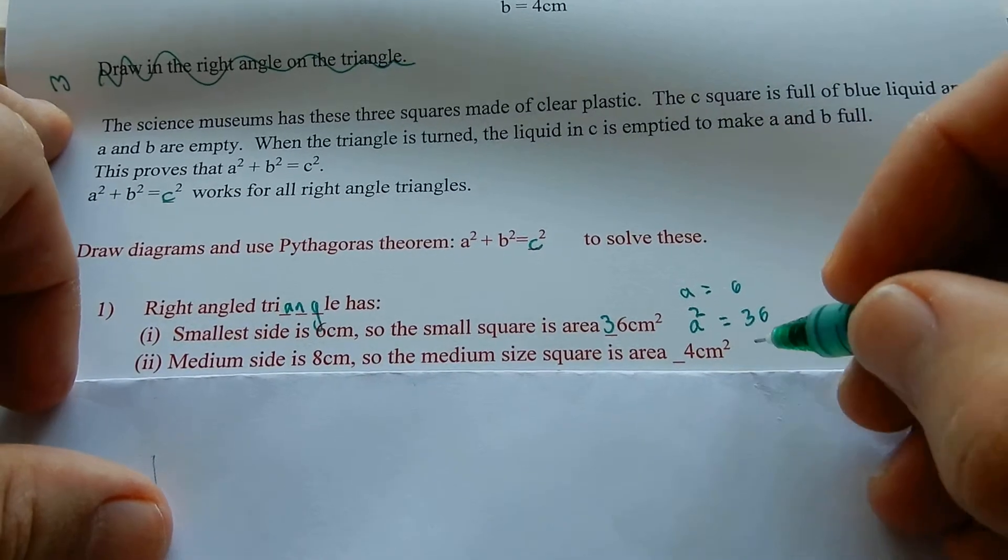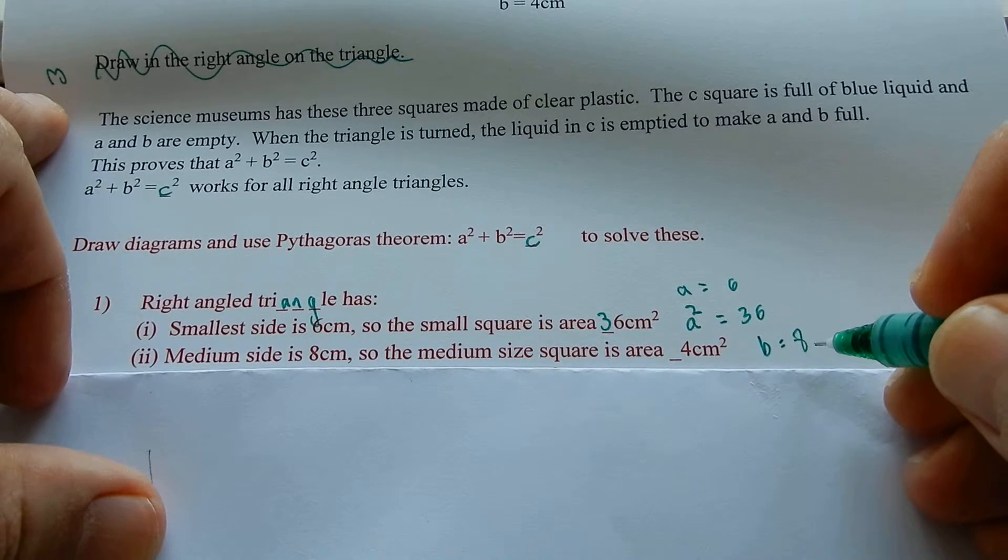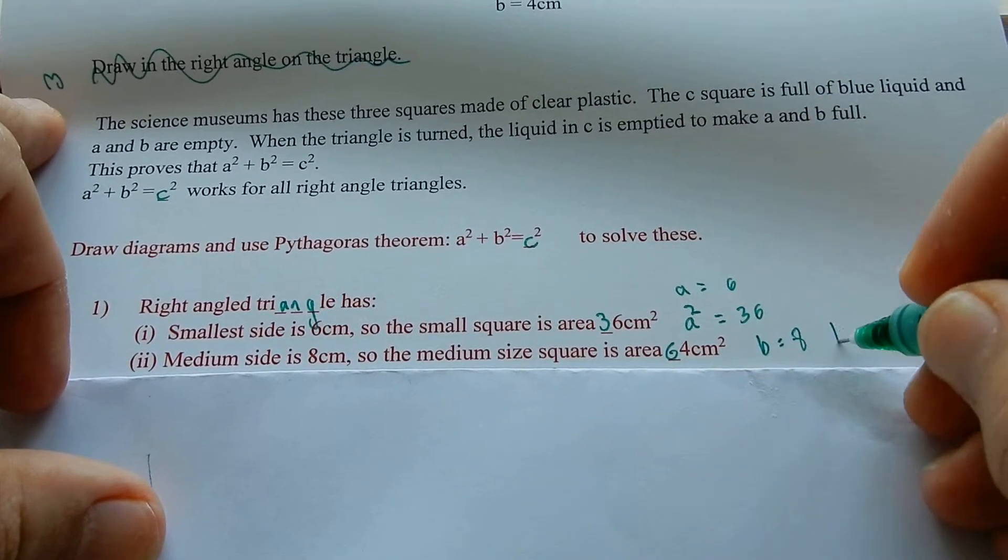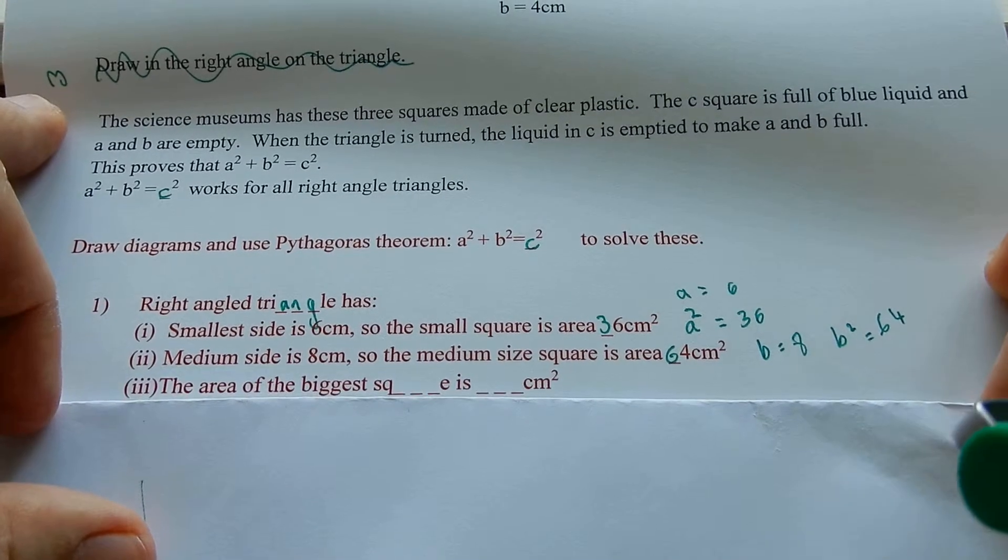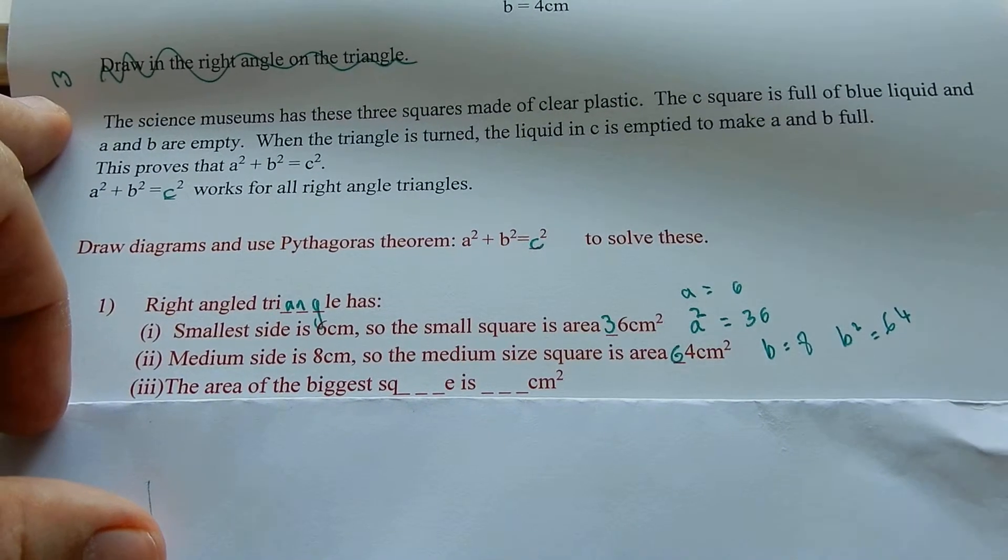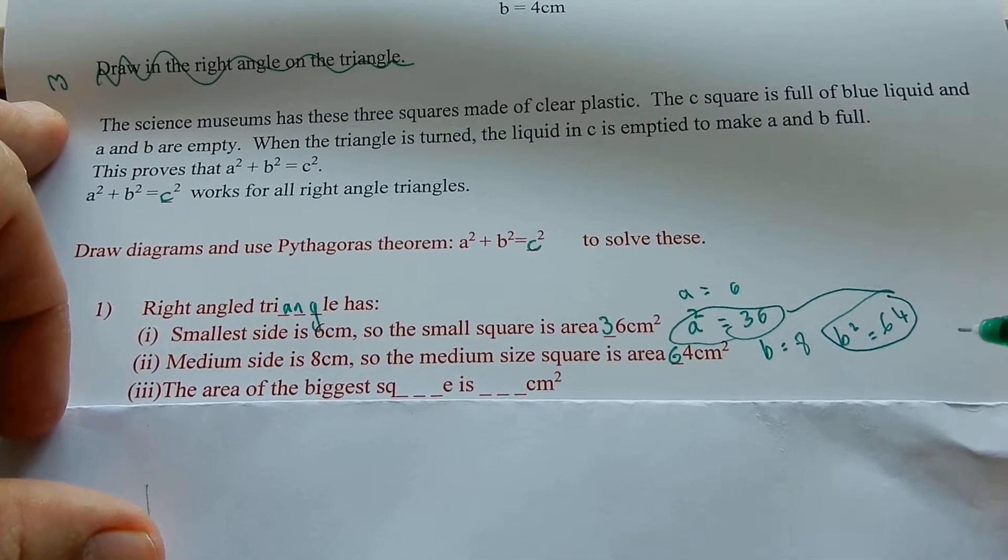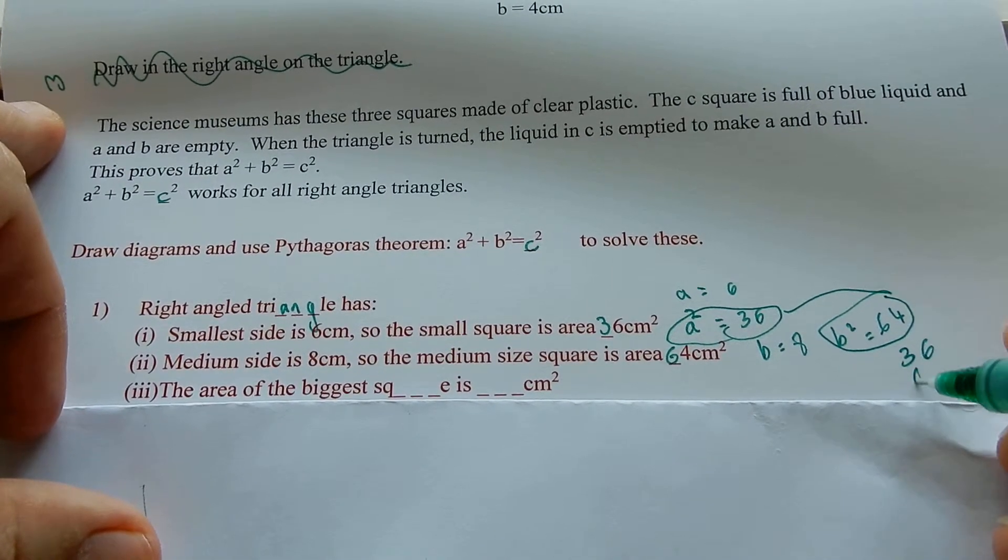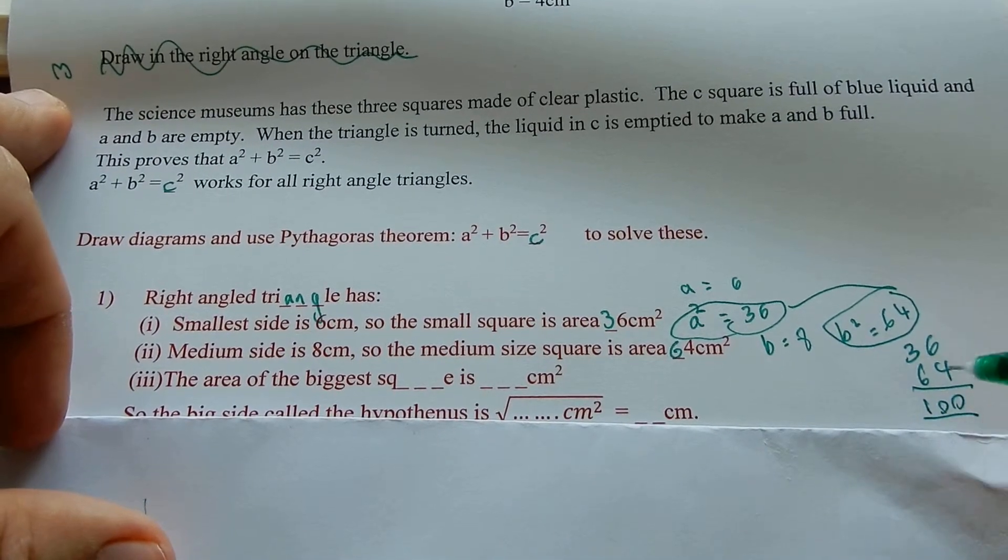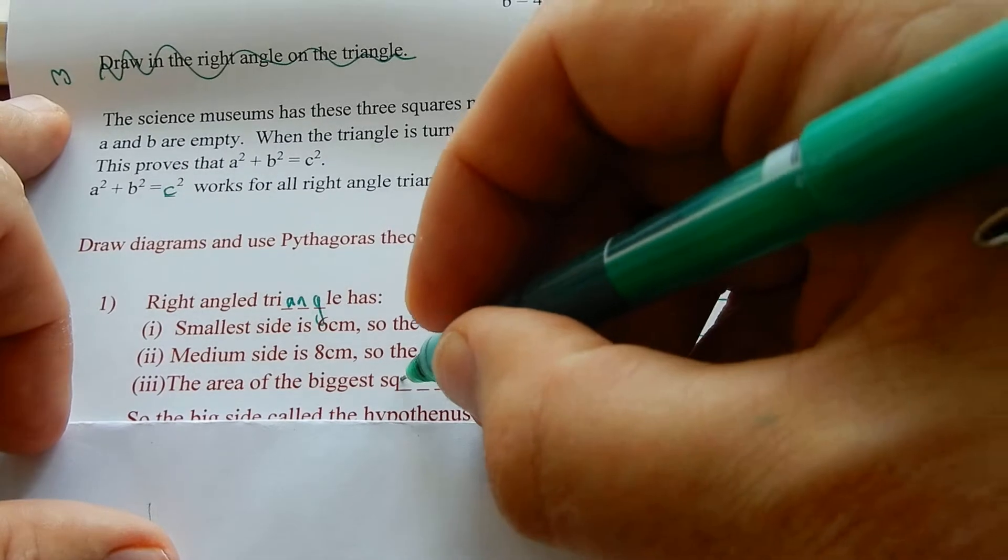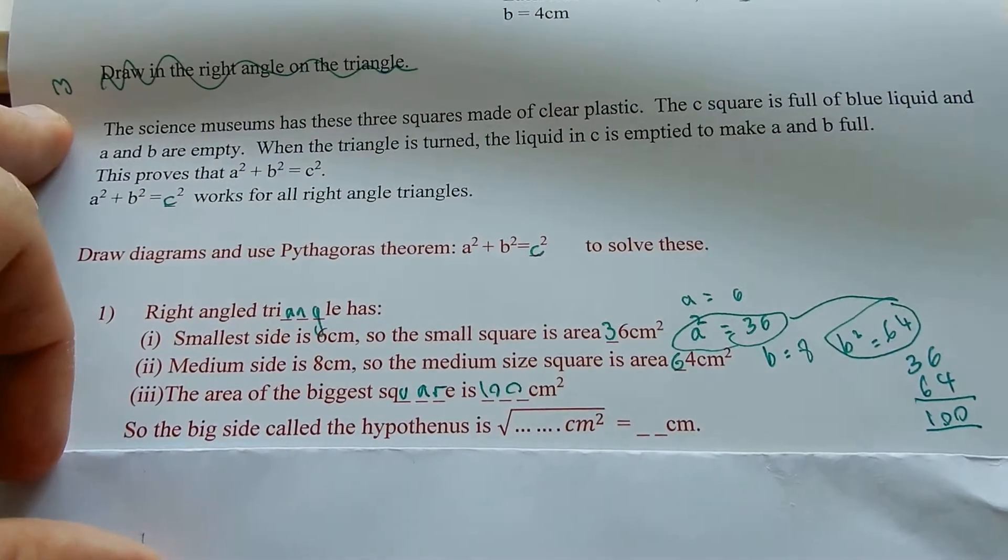The medium side is eight. B equals eight. Eight times eight is 64. B squared equals 64. The area of the biggest square is, well, you add these two guys together, 64 plus 36, 64. That's going to make 100, around 100. Biggest square is 100 centimeters squared.